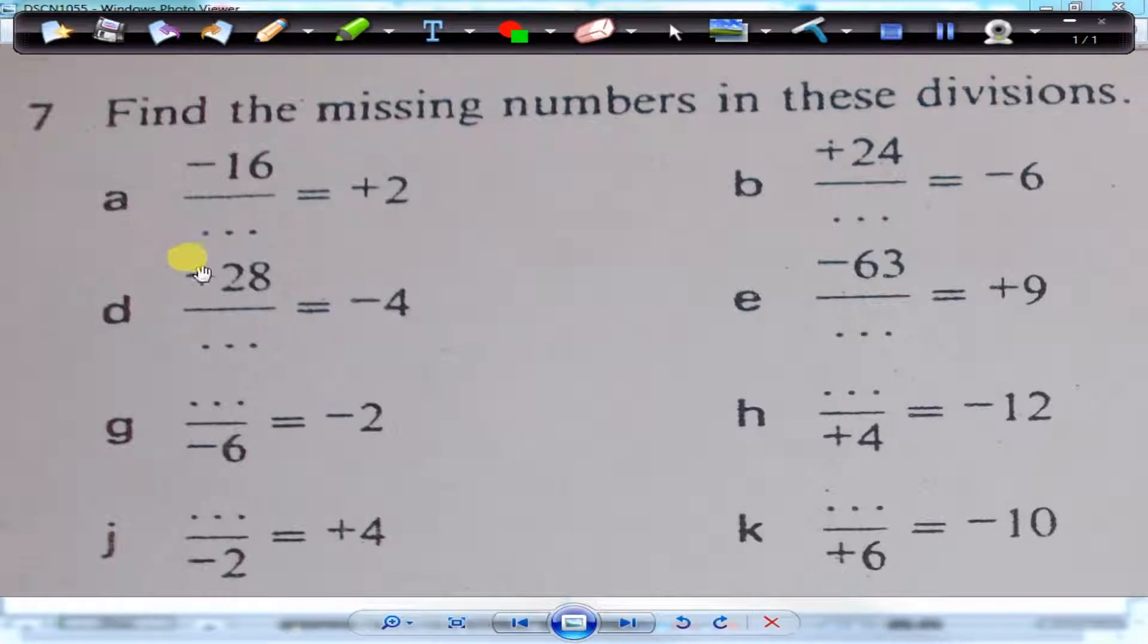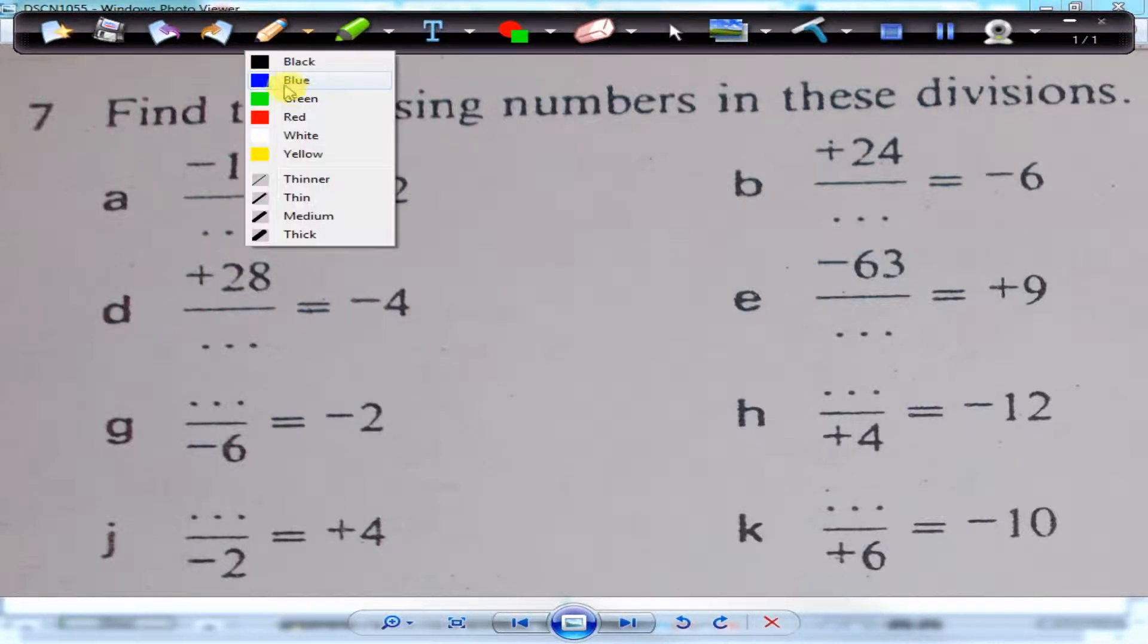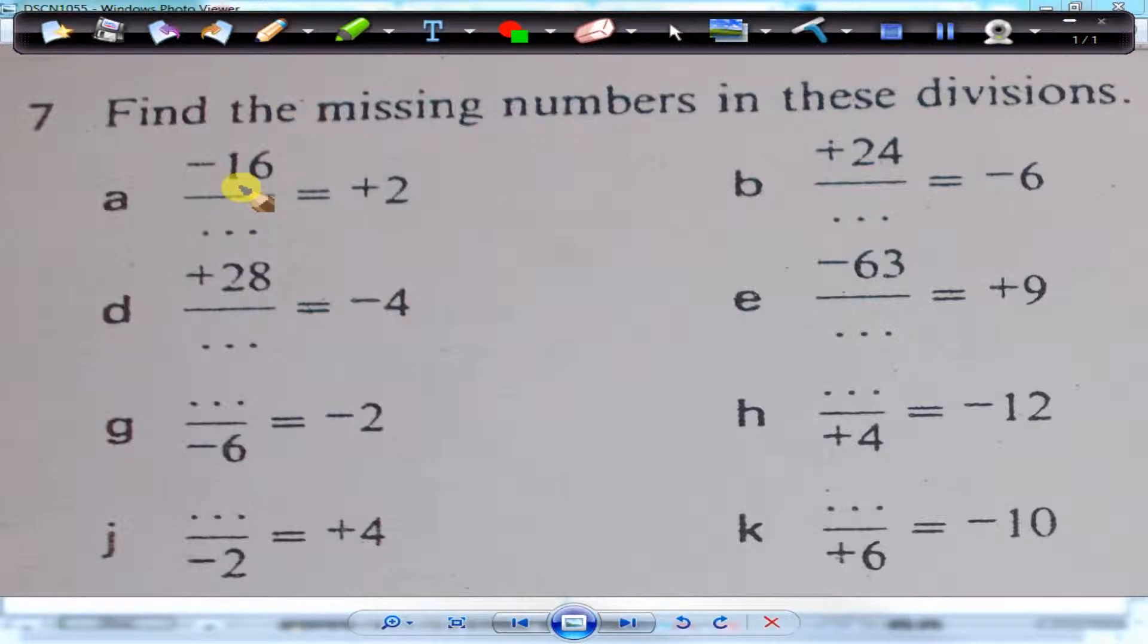Okay, Bismillah, right here, we're looking at some reverse negative questions. It says find the missing numbers in these divisions. Now, if we look at the sign here, this is a plus. In order to get a plus answer, we must have the same signs in the question. So, minus 16 divided by minus 8 will give us plus 2.